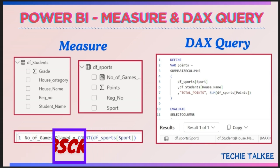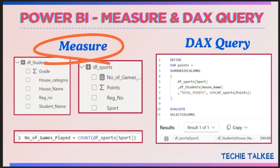First of all, what is a measure? We have raw data with us from the source file. There will be a need to come up with some derived value or a summary on that data. It can be some kind of aggregated value or a calculated value, which we call a measure.